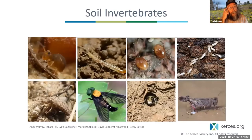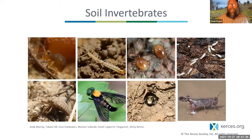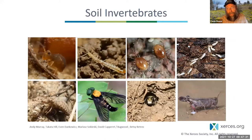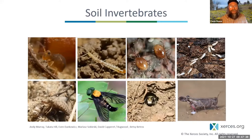99 percent of soil animals are invertebrates — animals without a backbone. Insects are about 80 percent of this group, and another 12 percent are arachnids. Soils are home to some of the most diverse communities on the planet.